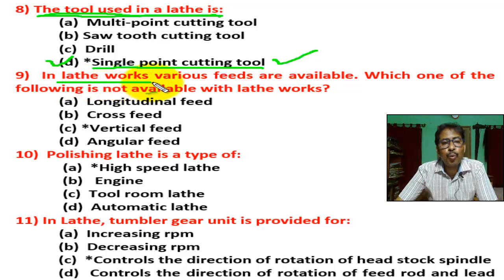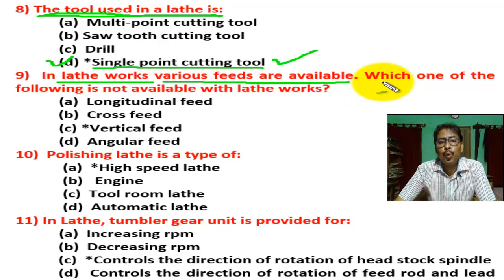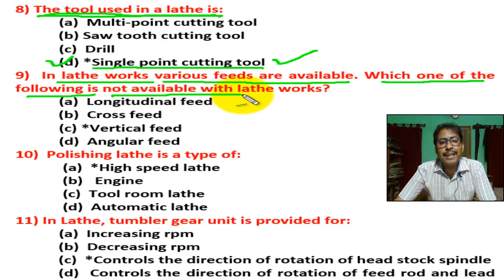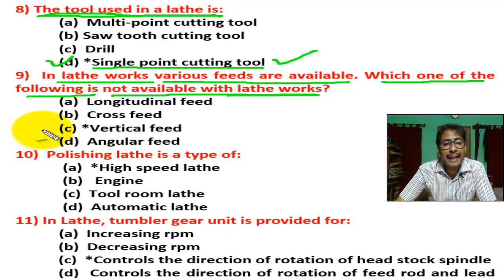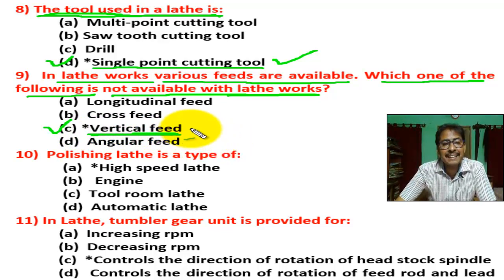Question number nine: in lathe work, various feeds are available. Which one of the following is not available in lathe work? There are four options. Correct answer is C — vertical feed. Vertical feed means feed in the Z direction.